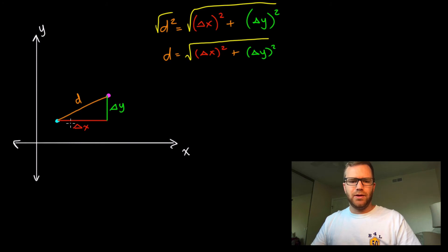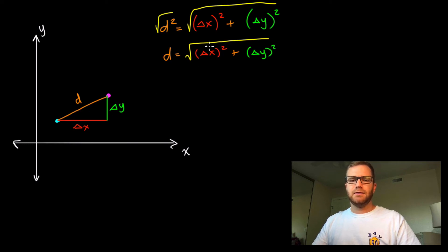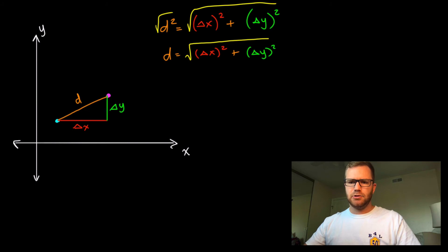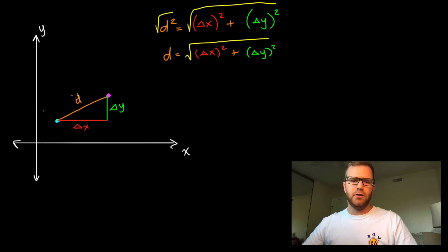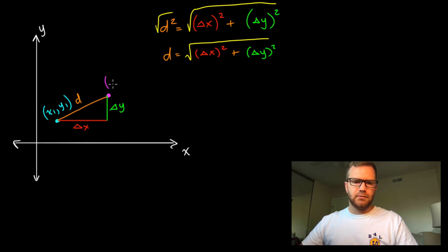This really only works if we already know what those horizontal and vertical lengths are — then we could plug them in and square them. But if we're given a problem where we need to use the distance formula, most likely we don't know those lengths. So we need to find a way to represent Delta X and Delta Y. To do that, let's give our two points some arbitrary ordered pairs. We'll call the first point (X₁, Y₁) and the other point (X₂, Y₂).